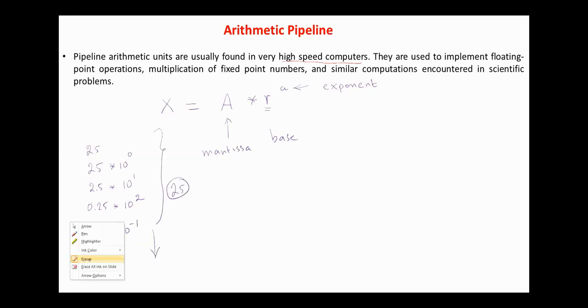The next definition we need is normalization. A normalized fraction is a fraction with a non-zero digit in the most significant bit. For example, from these forms, this is the normalized fraction form.